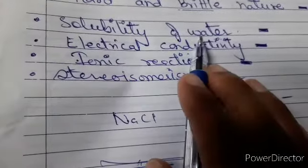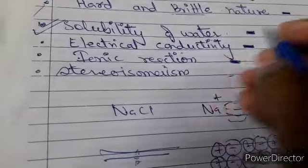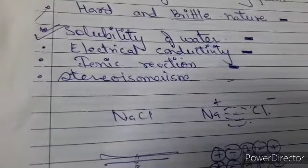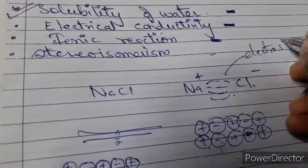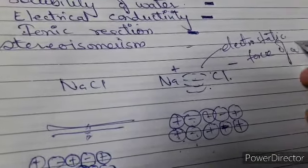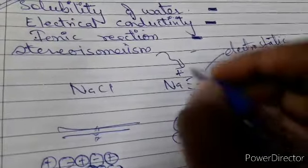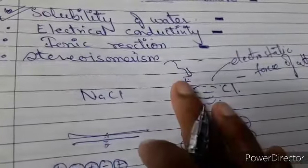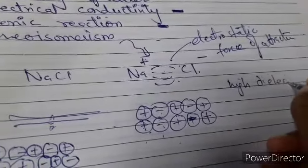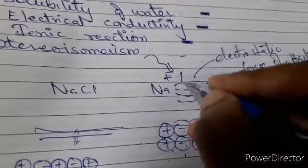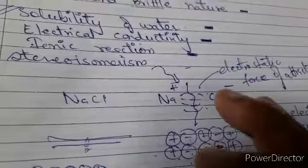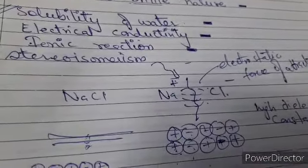Next, solubility in water: ionic compounds are soluble in water. Water is polar and has a high dielectric constant. The electrostatic force of attraction holds the ions together, but when water is added, its high dielectric constant weakens this electrostatic force of attraction. As a result, the ions are separated and the ionic compound dissolves easily in water.